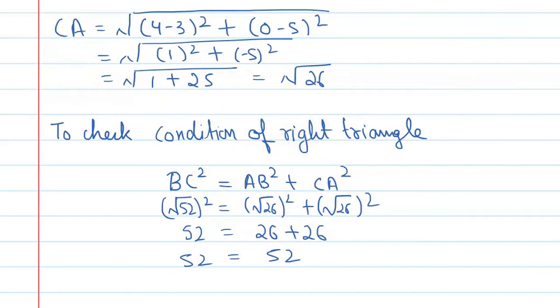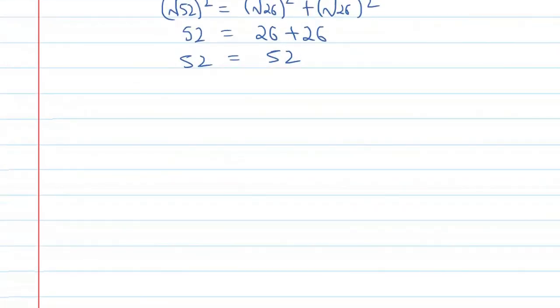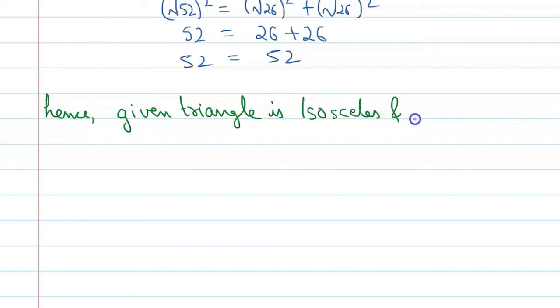So we can say that the given triangle is an isosceles right triangle. Hence, the given triangle is isosceles and right triangle, or isosceles right triangle. The correct option is A.